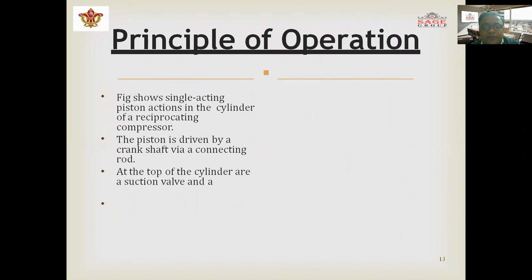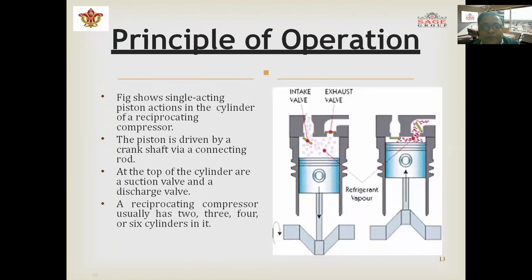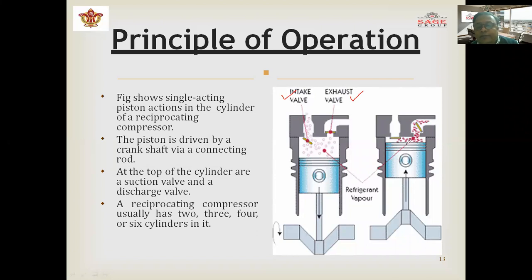This is the principle of operation, clearly shown in the diagram. This is the intake valve where air comes from outside, and the exhaust where air is forcefully sent to the delivery side after compression. This is a diagram for a single-acting, single-cylinder engine where compression takes place. In the suction process, the piston moves downward due to pressure differential. After compression, the piston moves to the top where compression is completed, pressure rises, and delivery takes place through the exhaust valve.